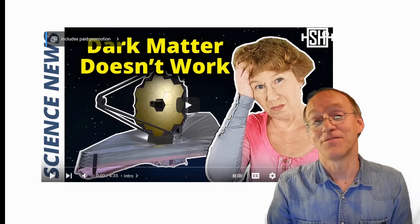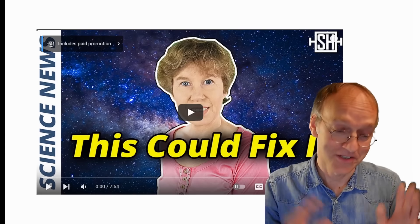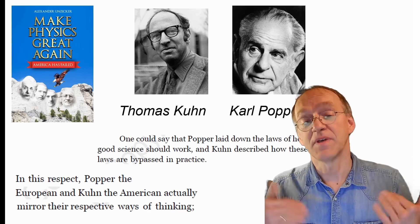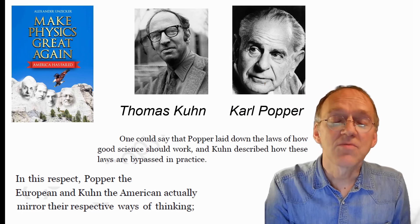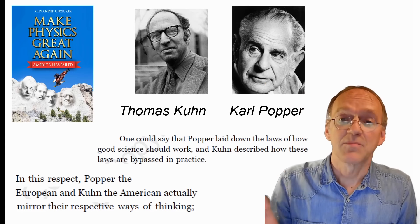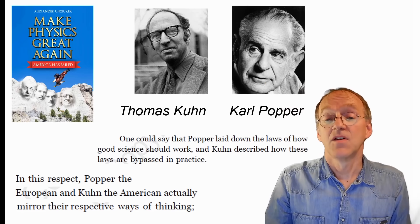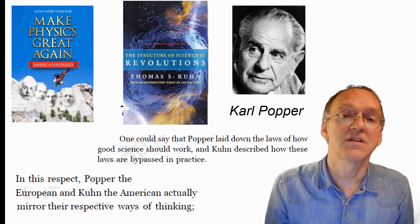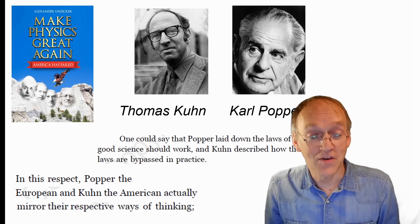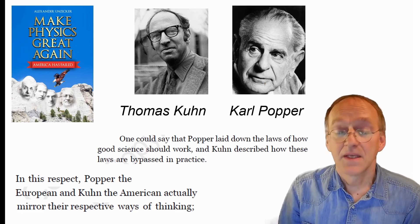So what surprises me here is that Sabine Hossenfelder rightly attacks non-falsifiable bullshit, but one week earlier she praises non-falsifiable bullshit. I don't understand this. But I think what we need to understand here is how science works, how scientific opinions are formed, how established theories in science are formed. You need to dive a little bit into philosophy of science. There are great minds like Karl Popper and Thomas Kuhn. Popper who developed the notion of falsifiability, and Thomas Kuhn wrote a fantastic book about paradigm shifts and scientific revolutions. I summarize the two messages in one: could say that Popper laid down the laws of how good science should work, and Kuhn described how these laws are bypassed in practice.